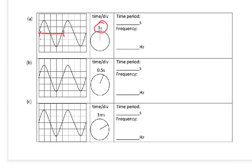And if we count the divisions, it's one, two, three, four divisions. So the time period is four times one second, which is four seconds. Now frequency, time period is equal to one over frequency, or frequency is equal to one over the time period. So one divided by four is a quarter, or 0.25. So our frequency is 0.25 hertz.